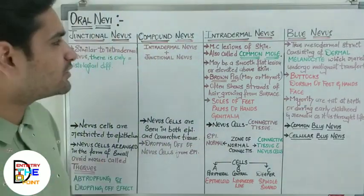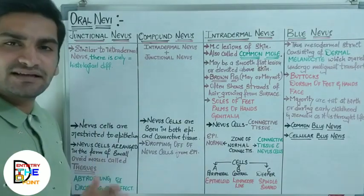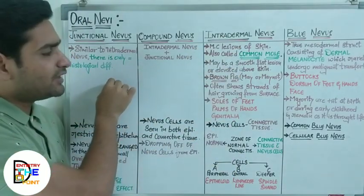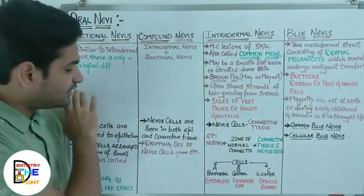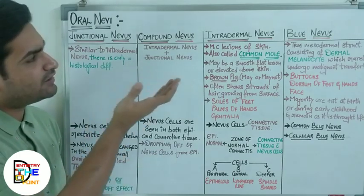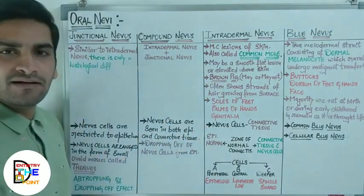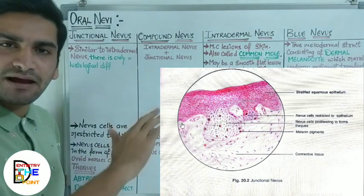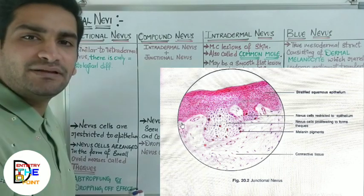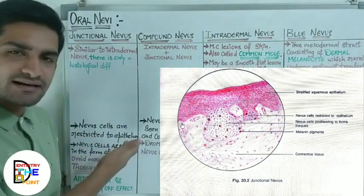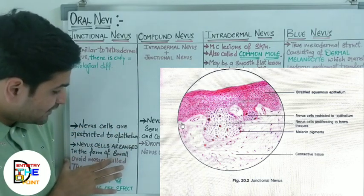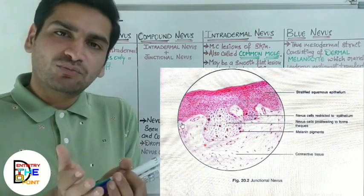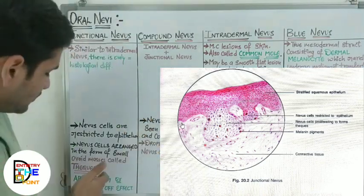Moving on to junctional nevus — clinically it is similar to intradermal nevus, so the clinical features are the same. However, there is a histological difference. In junctional nevus, the nevus cells are restricted to the junction of epithelium and connective tissue, whereas in intradermal nevus they have crossed into the connective tissue. The nevus cells are arranged in the form of small ovoid masses called theeks, present at the junction of epithelium and connective tissue — at the tips of the rete pegs.